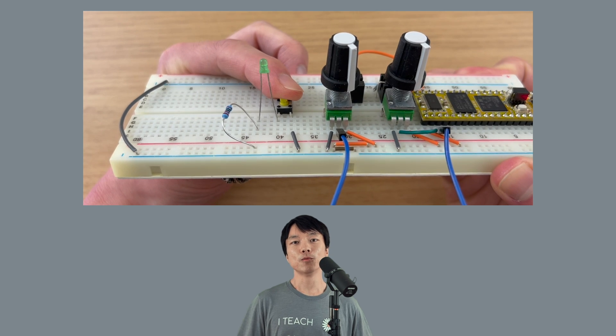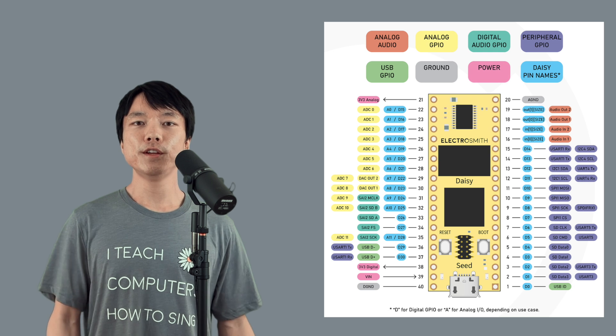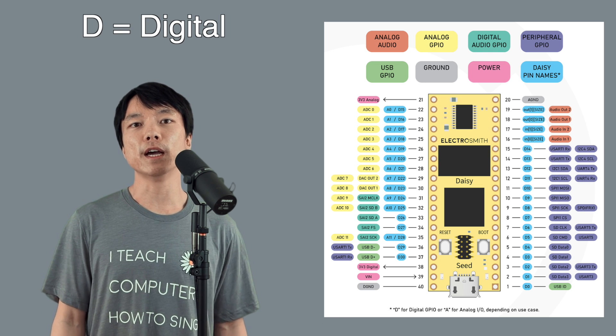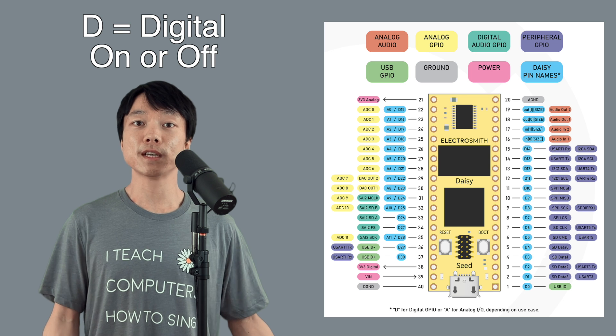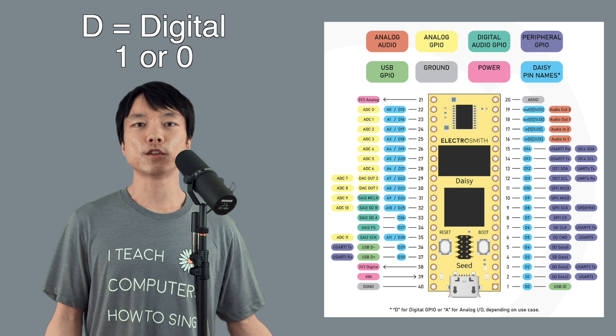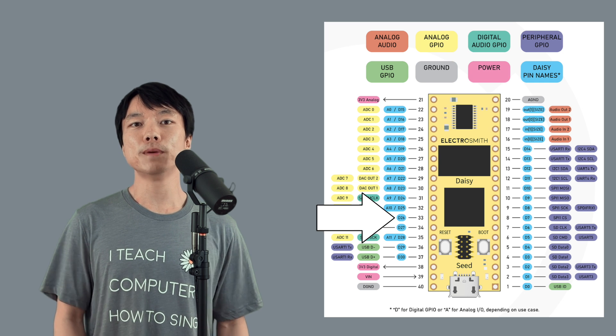As you can imagine, we can use this on-off interaction with the DAISY. Any of these pins that have the letter D, which stands for digital, can read the input as on or off. More precisely, 1 or 0, which is digital. And you may see the terms high or low as well. For this tutorial, we'll be using pin D26.